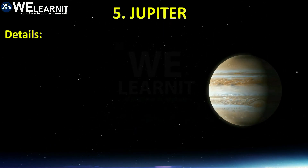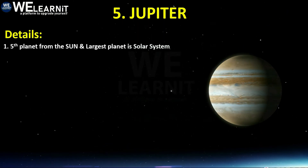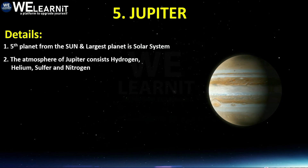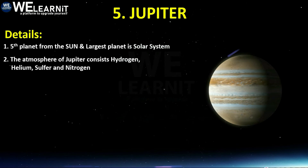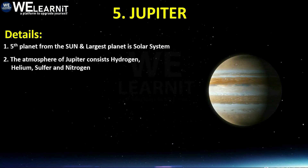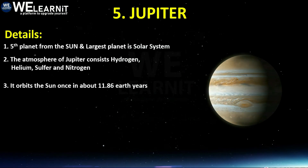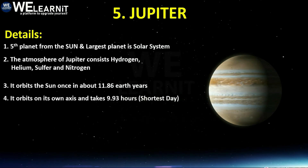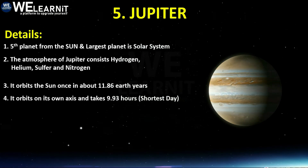The fifth planet is Jupiter, the largest planet in our solar system. Its atmosphere consists of hydrogen, helium, sulfur, and nitrogen. It orbits the Sun once in about 11.86 Earth years. Jupiter orbits on its own axis and takes 9.3 hours — which is the shortest day of any planet in our solar system.